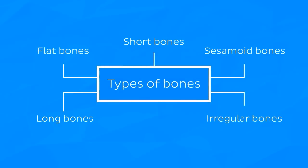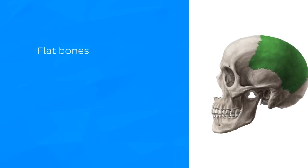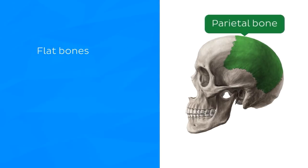Flat bones, such as the parietal bone of the skull, are broad and relatively thin bones. Flat bones often sit with other flat bones and form defined spaces or cavities, such as the cranial vault.